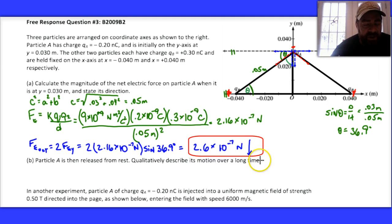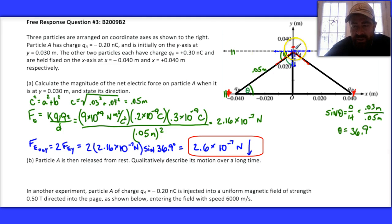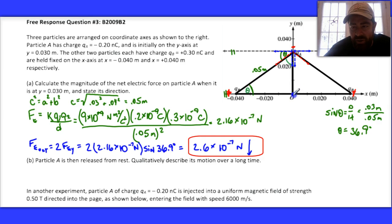Part B says particle A is released from rest — describe its motion over time. This is pretty darn cool. It requires the student to imagine: this thing is going to be accelerated downward, increasing its velocity until it reaches the origin.